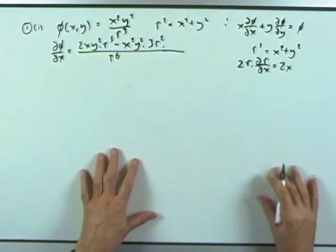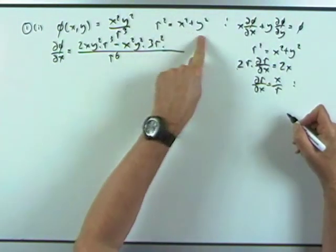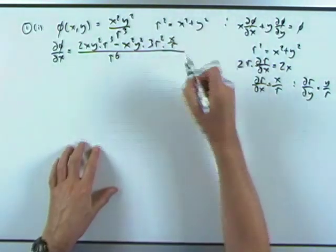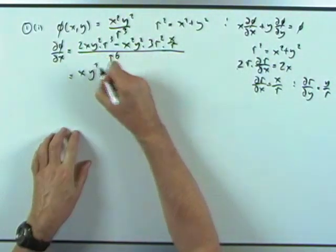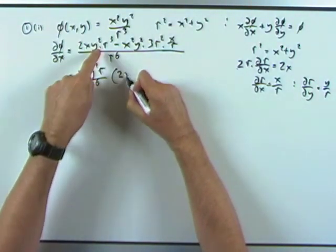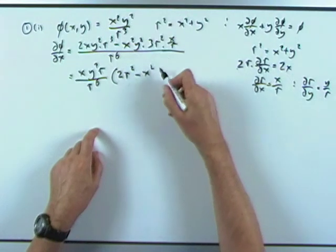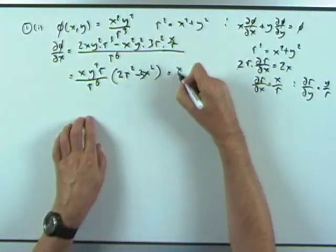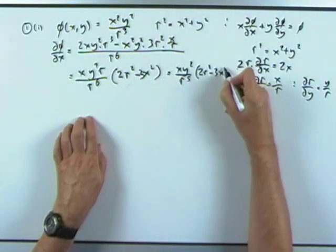Then differentiate r cubed: that's 3r squared times the derivative of r. Since r squared equals x squared plus y squared, 2r times the derivative of r with respect to x gives 2x, so partial r by x equals x over r. By symmetry, partial r by y equals y over r. Substituting back and tidying up - taking out x, y squared, and r over r to the sixth - we're left with xy squared over r to the 5, times the bracket 2r squared minus 3x squared.